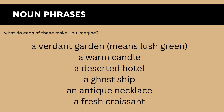Let's look at some noun phrases. Remember, this is where we have a determiner, an adjective and a noun together. What do each of these make you imagine? First of all, if I say 'a verdant garden' — verdant means like a lush green — a verdant garden. What feeling comes to mind and what can you picture in your mind's eye?